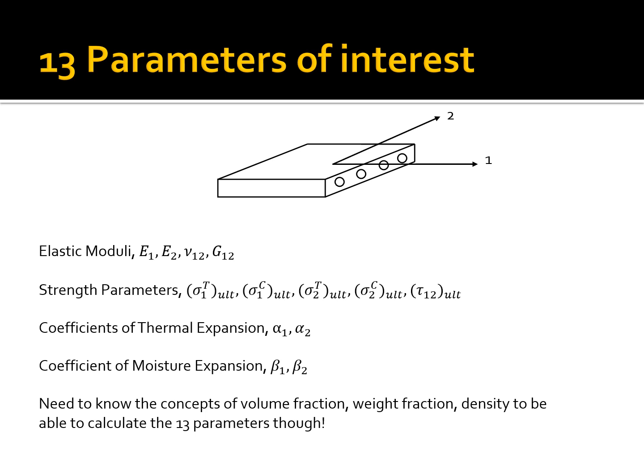So the question is, why do we need micro-mechanical lamina? If you go back and look at the macro-analysis of a single lamina, we found out that we're using 13 properties: four elastic moduli, five strength parameters, two thermal expansion coefficients, and two moisture expansion coefficients.